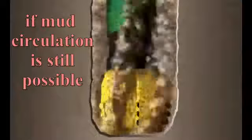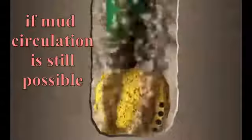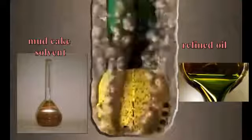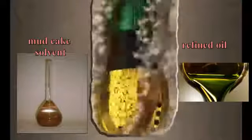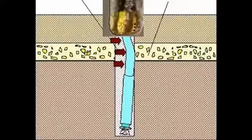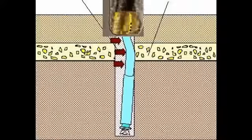Here, if mud circulation is still possible, then a few barrels of refined oil or mud cake solvent might be circulated down the pipe and then up the annulus until it's over the stuck area. Thus, by keeping the tension and torque on the pipe with this fluid, it may be enough to free the stuck pipe.